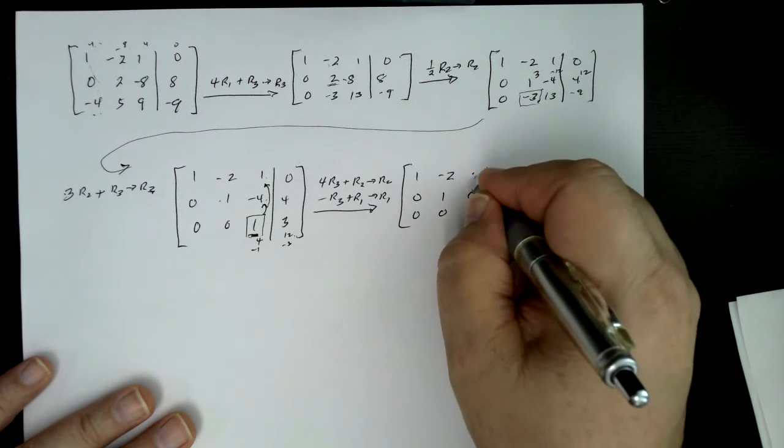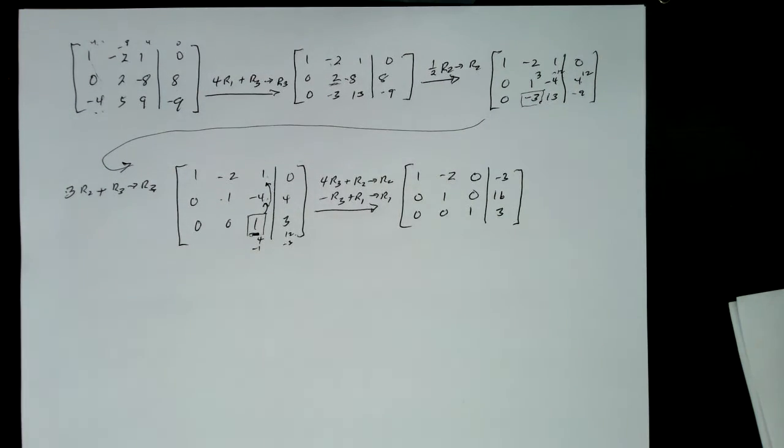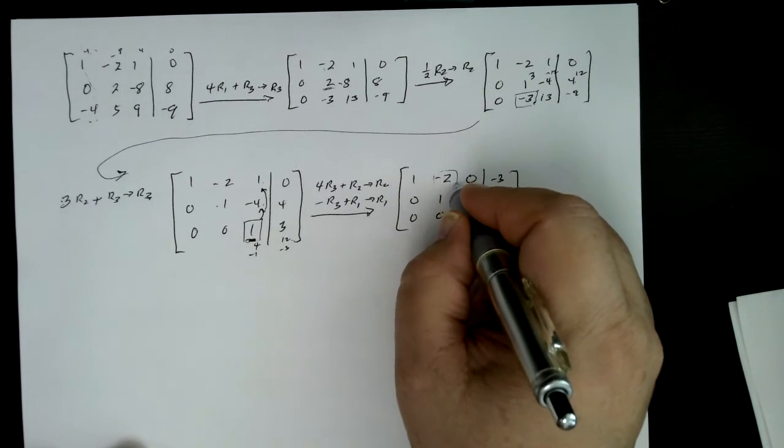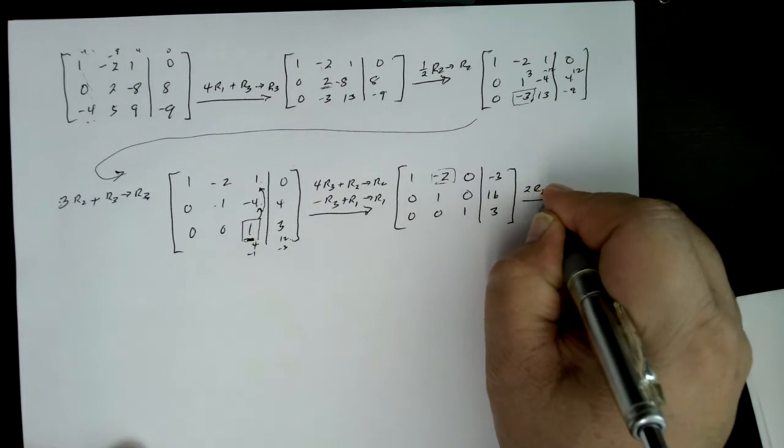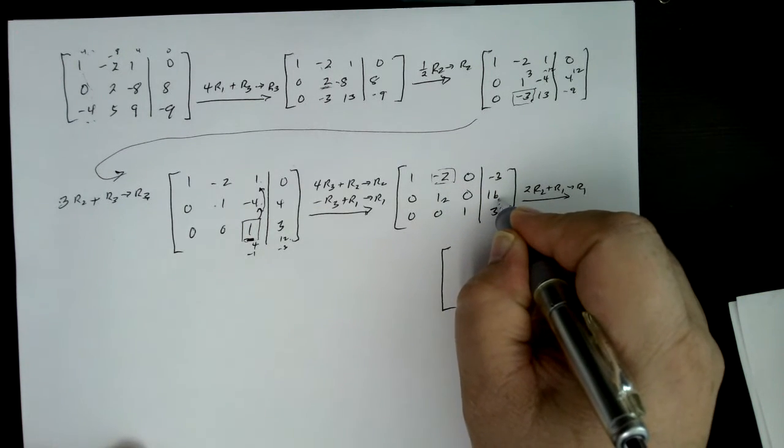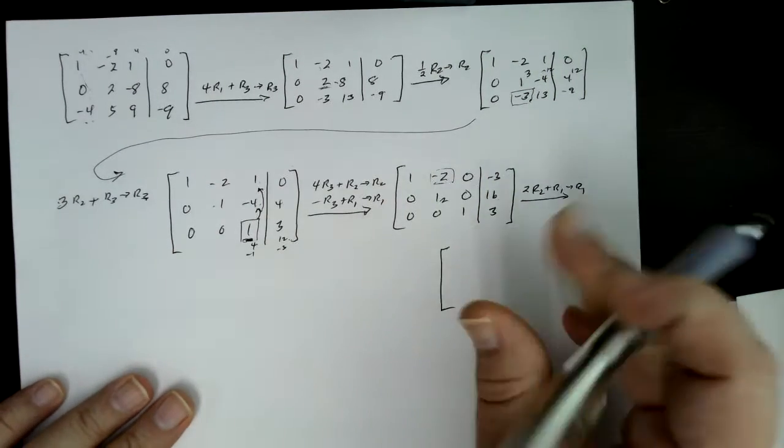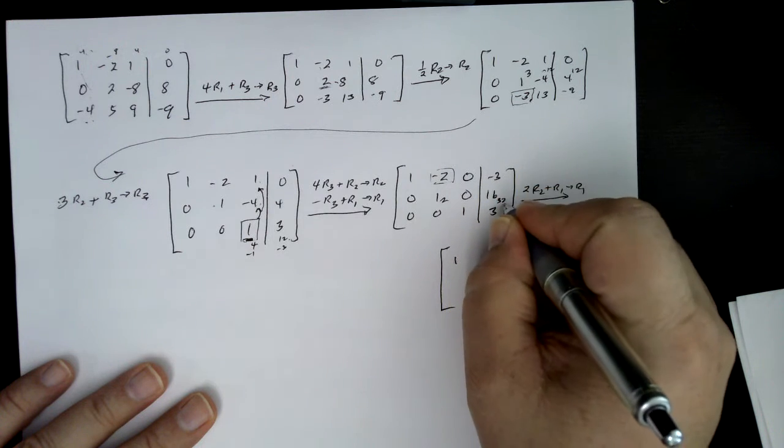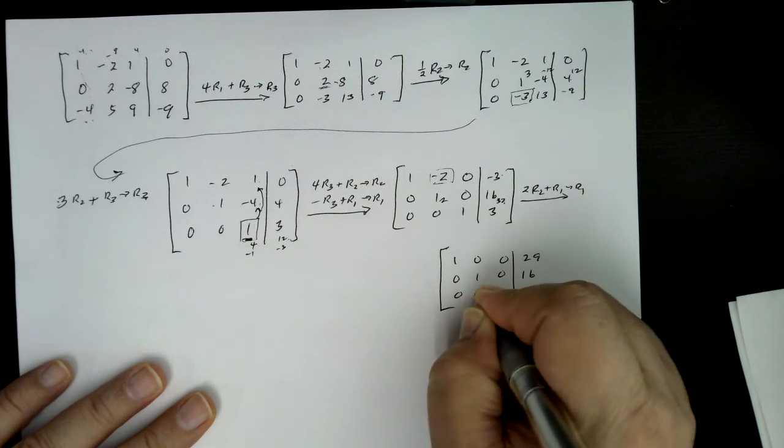Okay, and then finally, I'm going to eliminate x2 from the first equation, and I'll do that by taking two times row two plus row one, and then put the result back into row one. And if I do that, right, that's going to be a two, and what's two times 16? Okay, sorry about that. We're running short of time here, so we end up with, where were we? Two times, yes, two times 16 is 32, and then minus three would give us a 29 there, right? So one, zero, zero, 29, zero, one, zero, 16, zero, zero, one, three. Good.